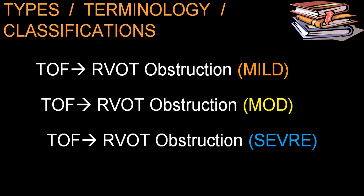Depending upon severity, TOF is divided into mild, moderate, and severe. In severe variety, there is almost pulmonary atresia. In mild variety, there is very mild infundibular pulmonary stenosis, and patients are often not cyanotic.